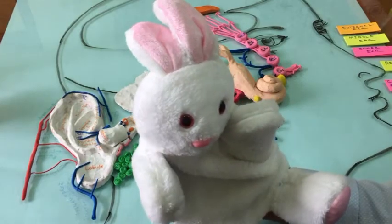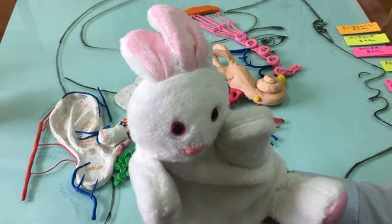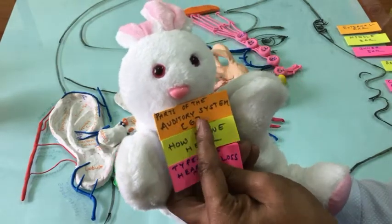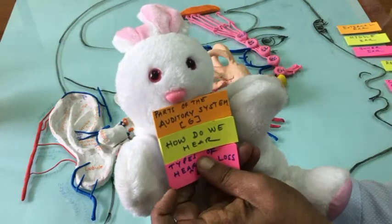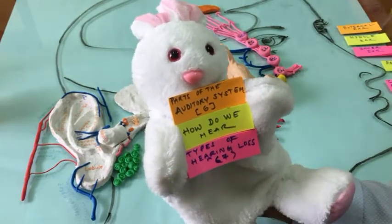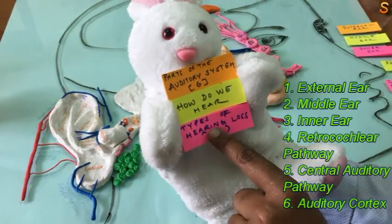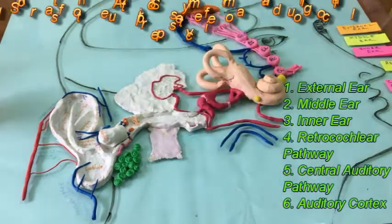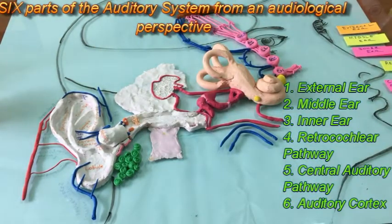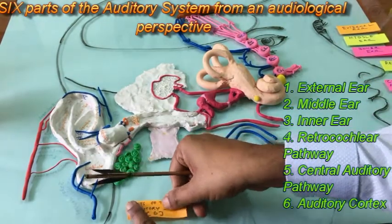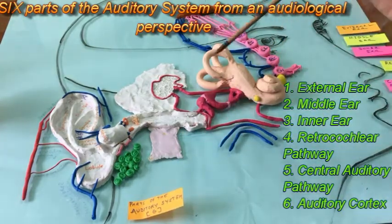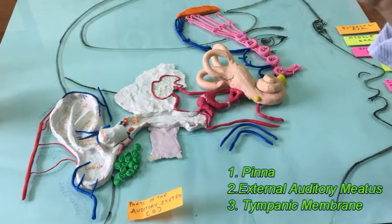Namaskar. In this video we are going to study about three core things: first, the parts of the auditory system; second, how do we hear; third, the types of hearing loss. From an audiological perspective, there are six parts of the auditory system.